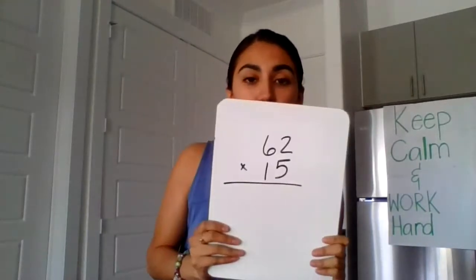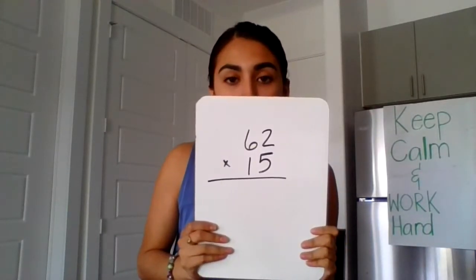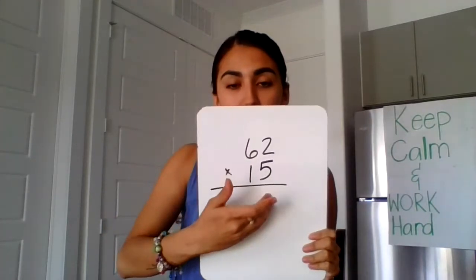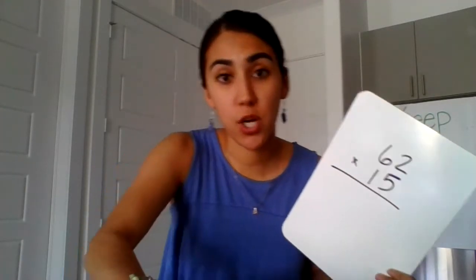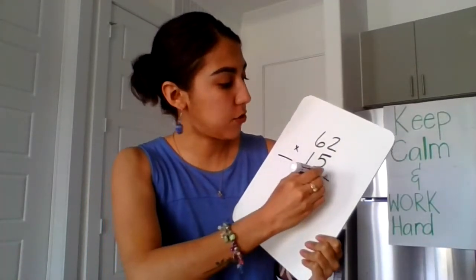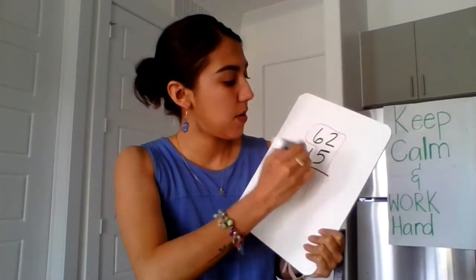Let's go ahead and get started. The first problem is they want us to multiply 15 times 62. So put the biggest number on top, make sure you're lining them up by place value, and let's go ahead and get started using the turtle method. I'm going to draw my turtle.